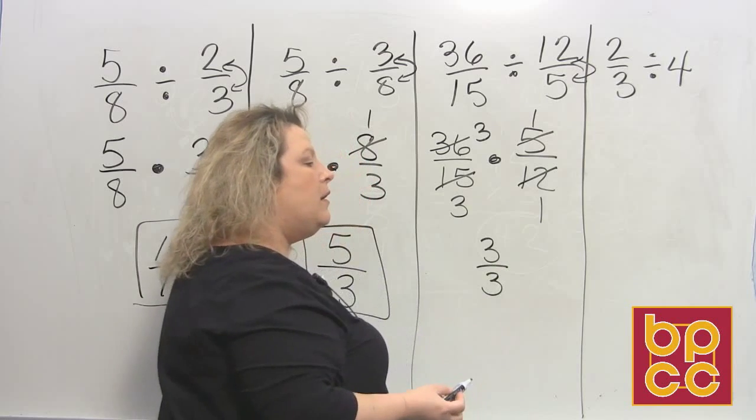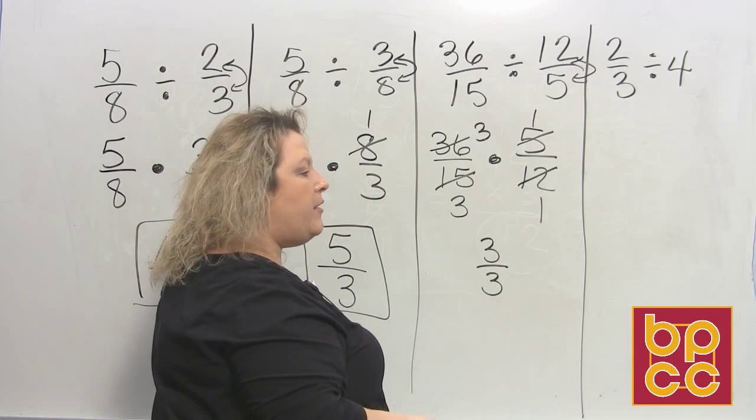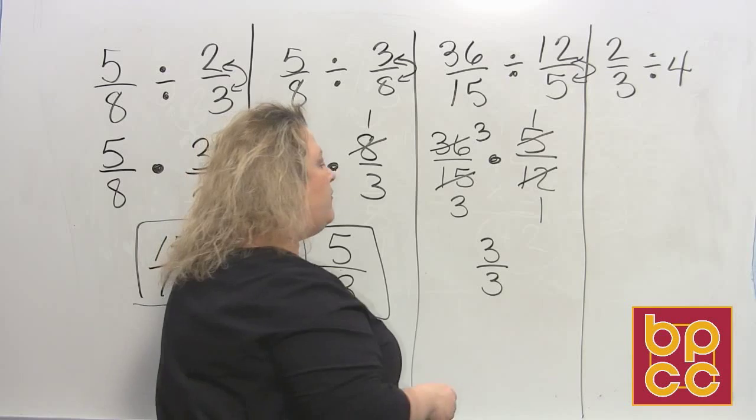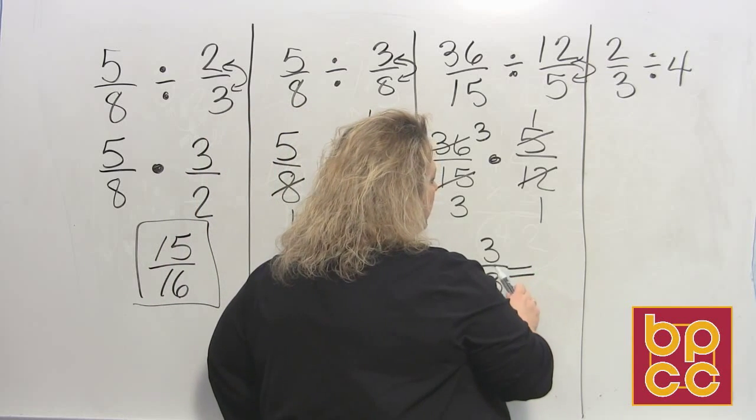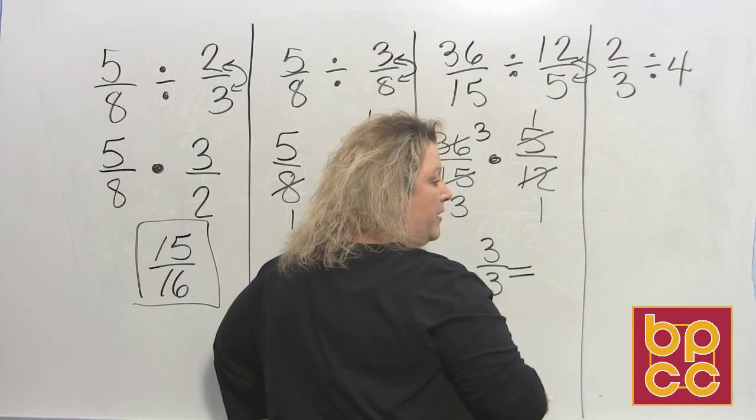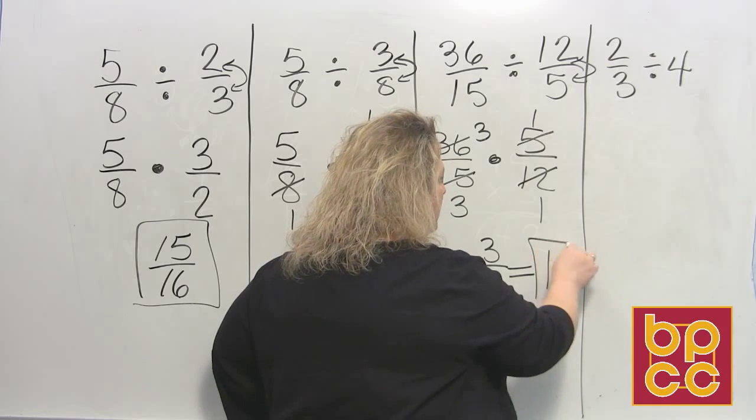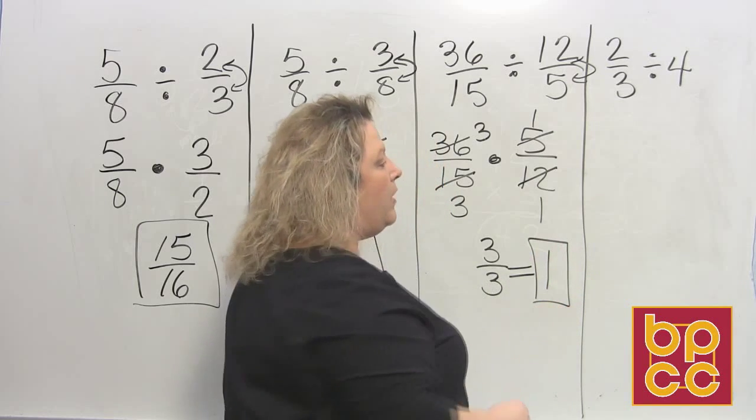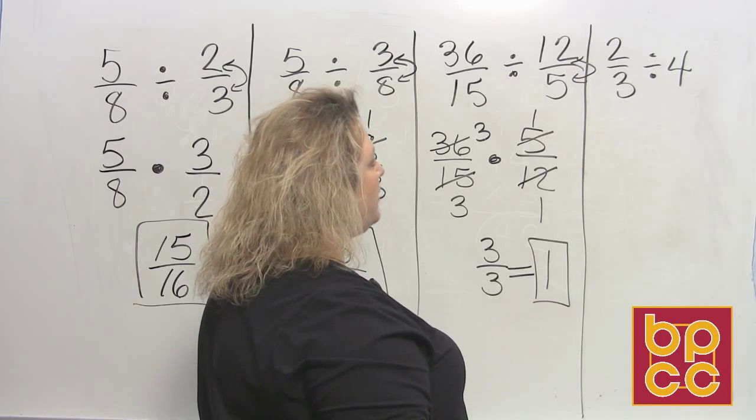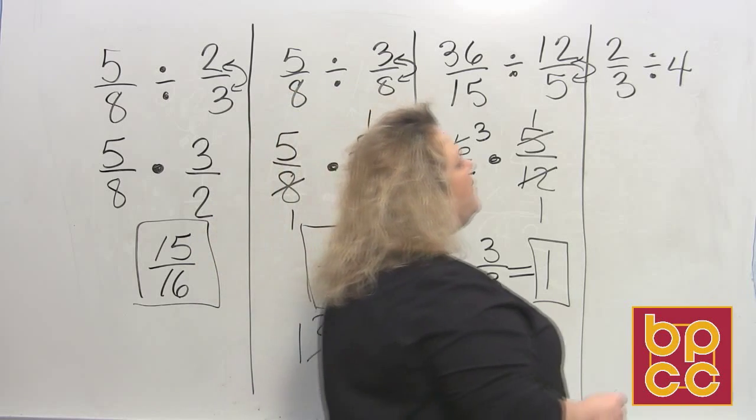Now, 3 divided by 3. Anytime you have a number divided by itself, it is not in simplest form. Simplest form would be, how many times does 3 go into 3? Once. So that would be 1 would be the lowest form for that fraction. Okay, the last one, when you're dividing fractions, what if you divide by a whole number?